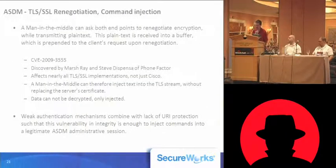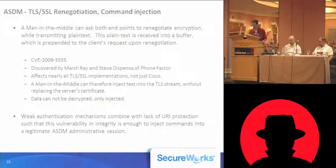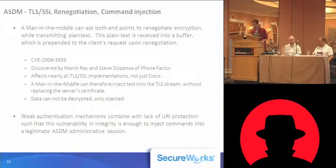Another way to exploit these weaknesses is through the SSL renegotiation vulnerability discovered in November. This vulnerability was discovered by Marsh Ray and Steve Dispensa at Phone Factor. It affects pretty much — in fact, I'm not aware of any SSL implementation that wasn't affected. It's a protocol design flaw, not an implementation flaw. So Cisco is far from alone in being impacted by this.